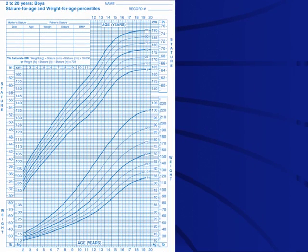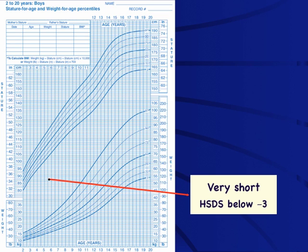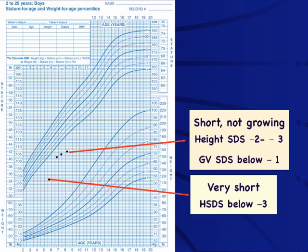To answer these questions, we need to measure the child and plot on the chart. Looking at a few cases: the first child whose height is much below the third centile definitely requires evaluation — height standard deviation less than minus three or below the first centile requires evaluation. For a child just below the third centile, we can watch and follow up. If that child is drifting away, with height SDS between minus two to minus three and growth velocity less than minus one or around four centimeters per year, we need to be concerned.